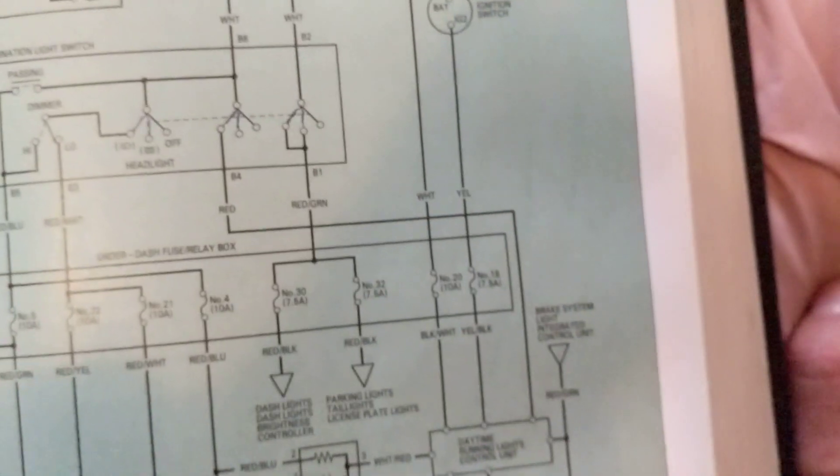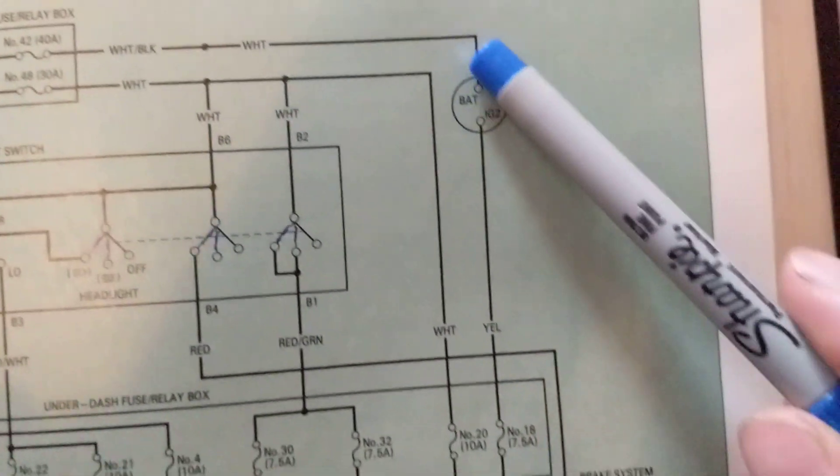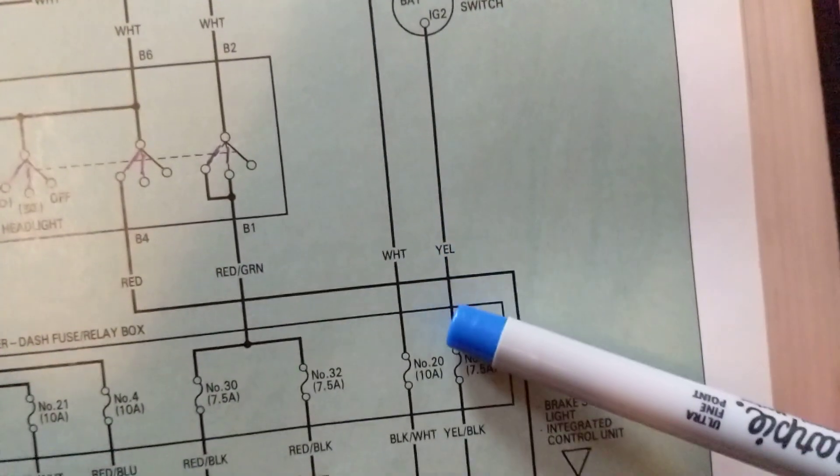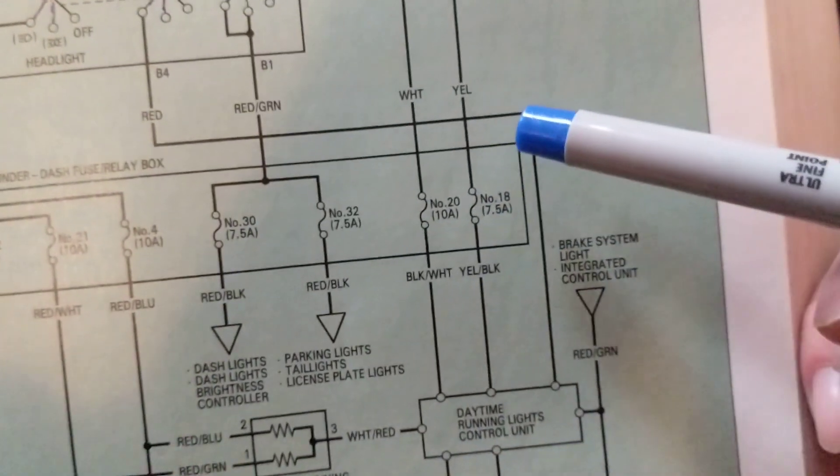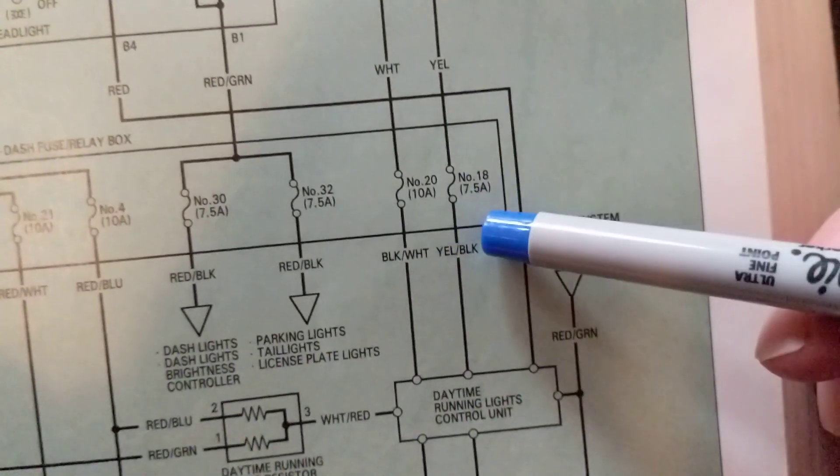Continuing our discussion of how to understand and analyze schematics. We started over here in a previous video. We were up to this point - this is now a yellow wire from the ignition switch in automotive. It becomes a yellow black after the other side of the switch.